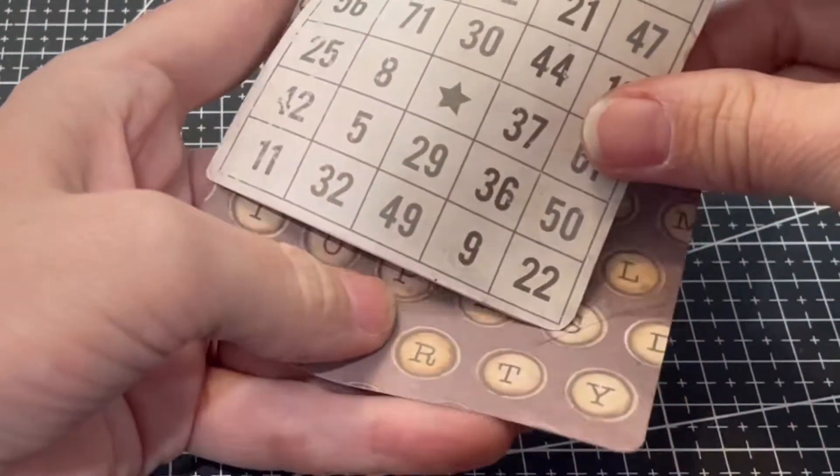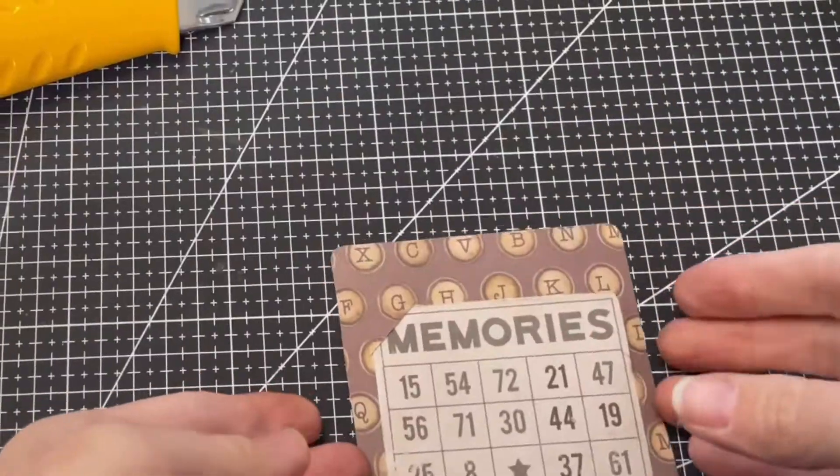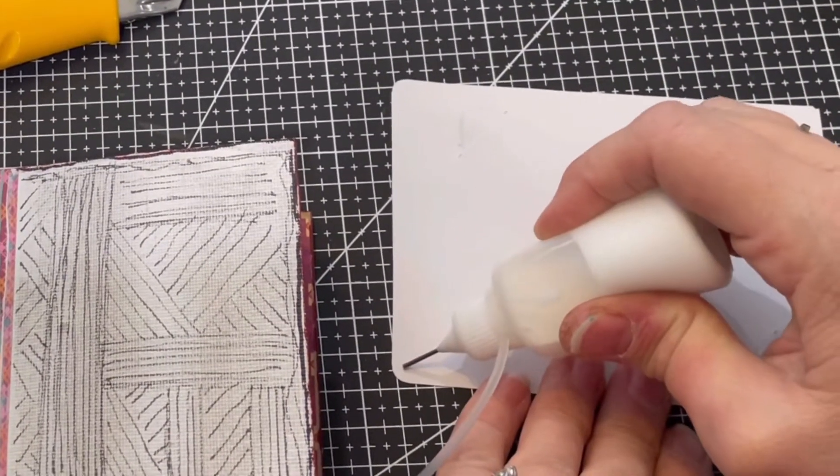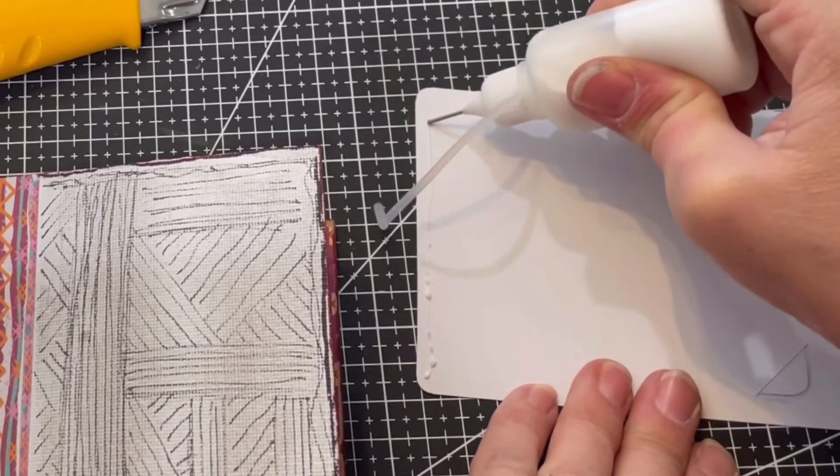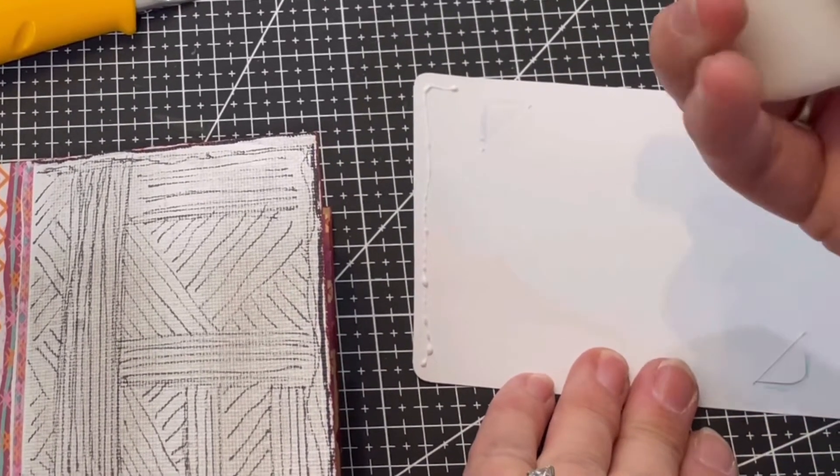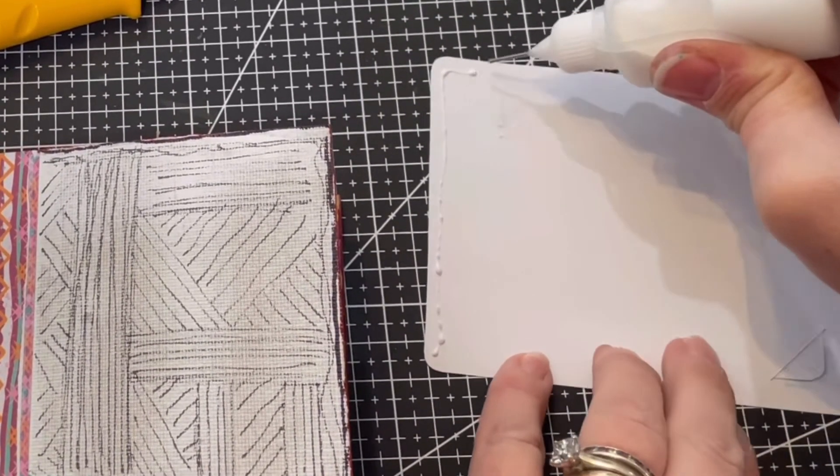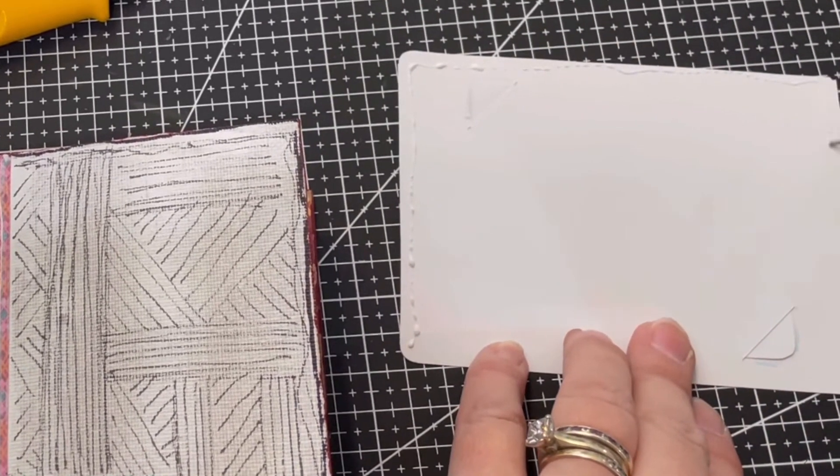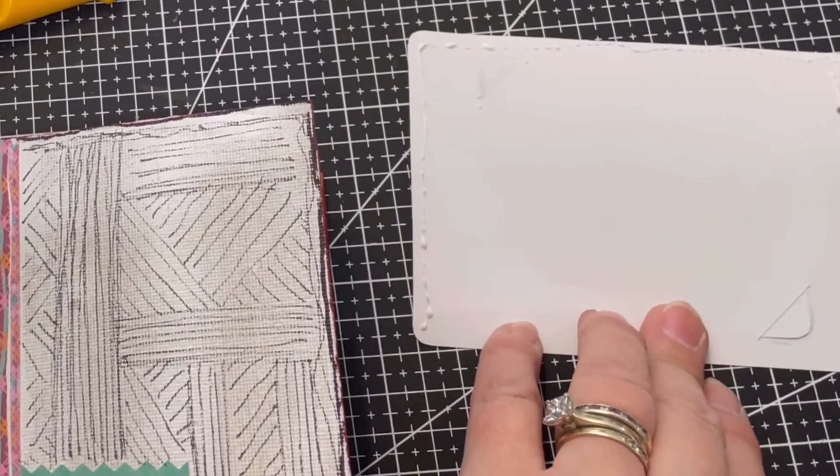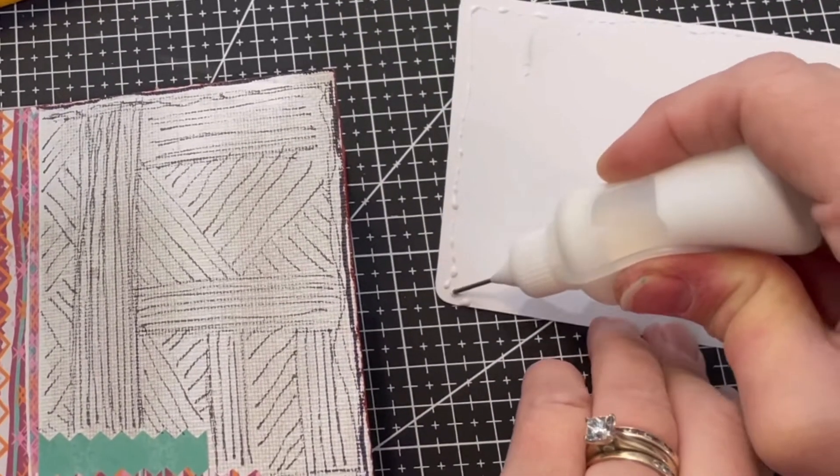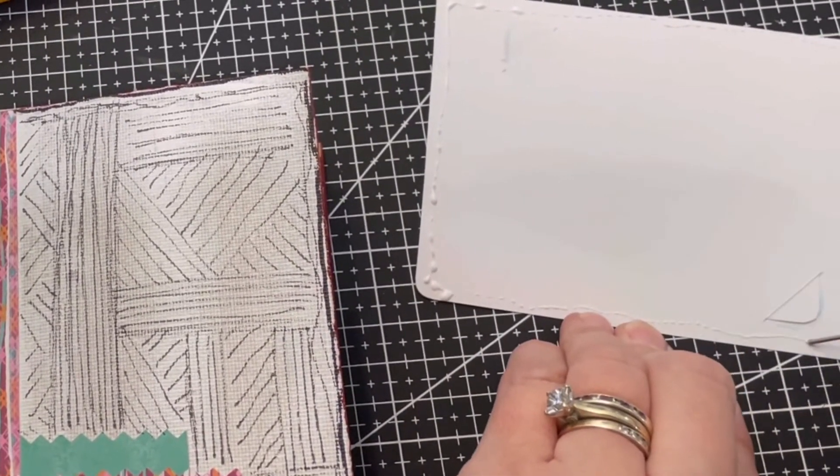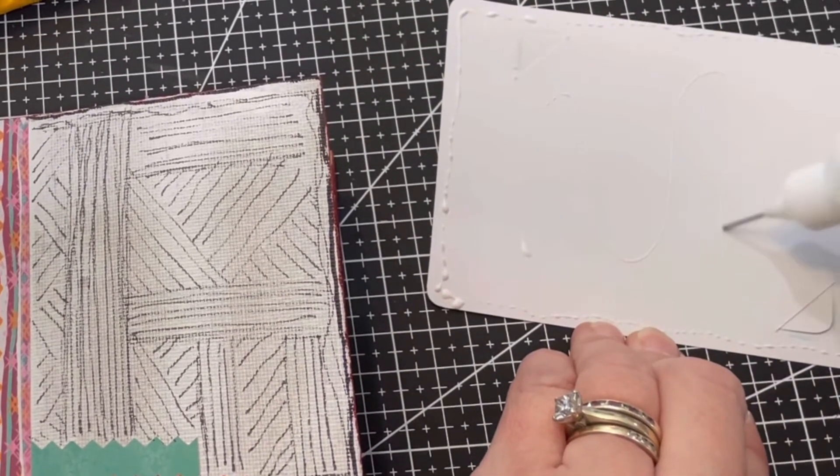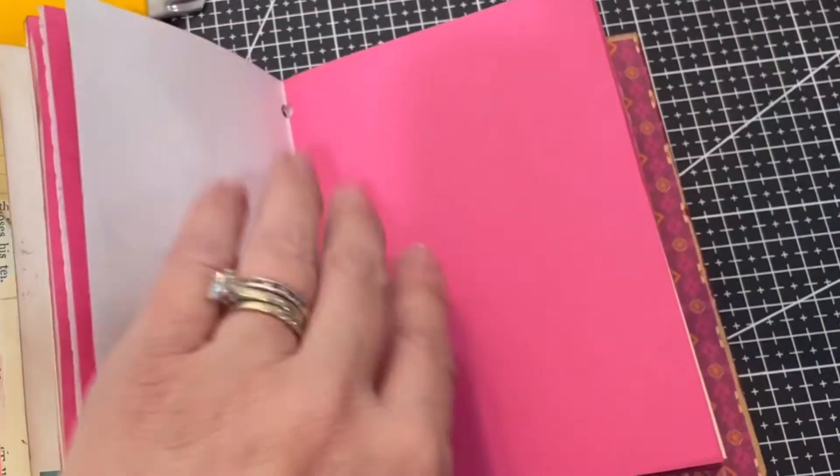And you could put in that anything. You can have a journaling card, you can have a little notebook, you could have a picture that you really want someone to see. So the possibilities really are quite endless. And all you're doing is you're sticking the whole thing down on your page. So I'm gluing all the way around the edge there. So it sits down nice and firmly.